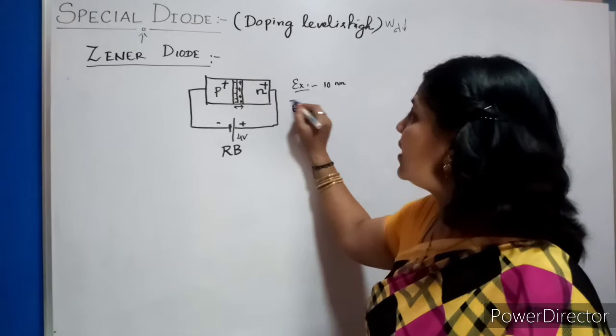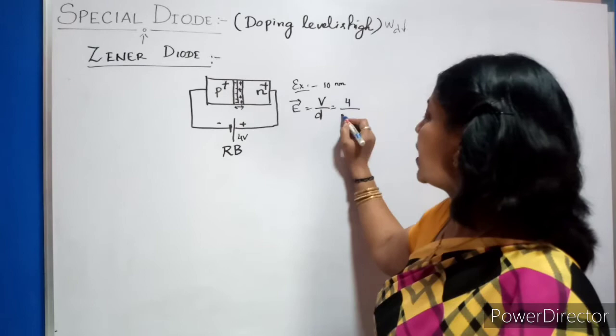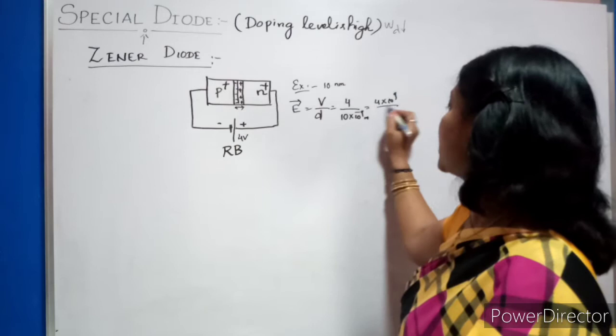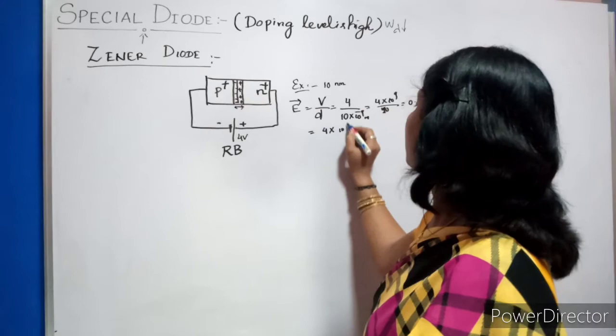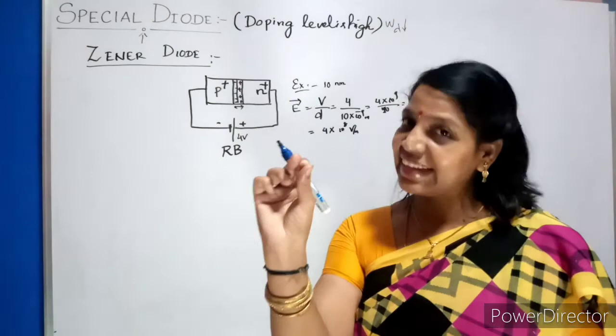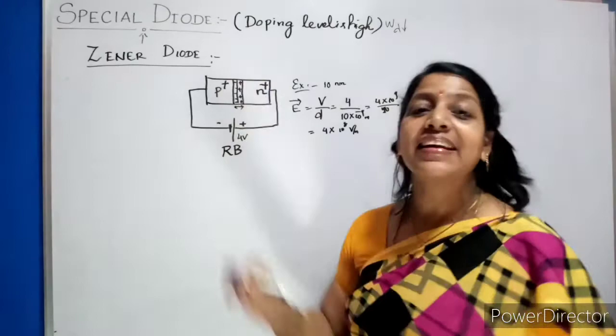Zener diodes usually operate in the 6 volt range. For example, I am giving 4 volts. You know the electric field E equals V by D. So 4 volts divided by 10 nanometers - nano means 10 to the power minus 9 meters. So it will be 4 times 10 to the power 8 volts per meter. Just imagine how large an amount of electric field is generated at the junction. Because the depletion width decreases, your electric field is inversely proportional to depletion width. As it decreases, your electric field enhances.